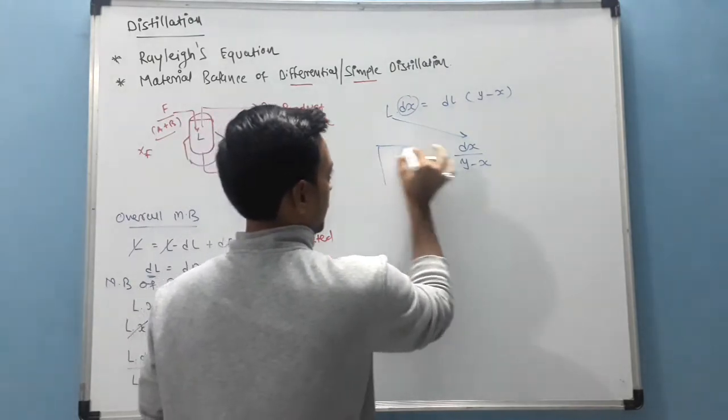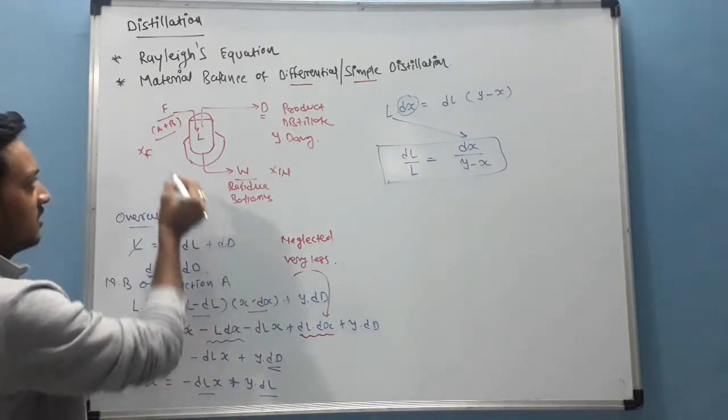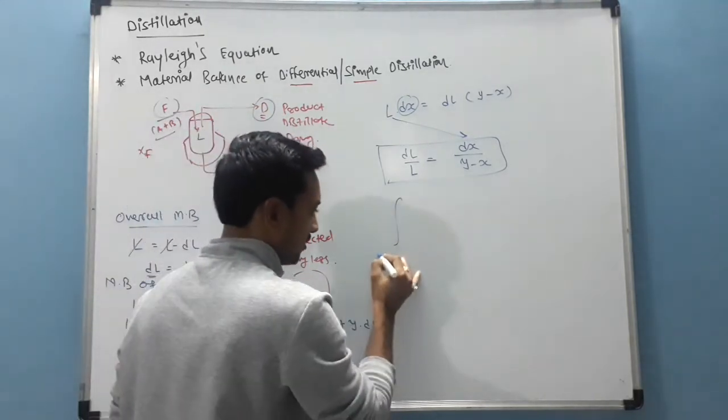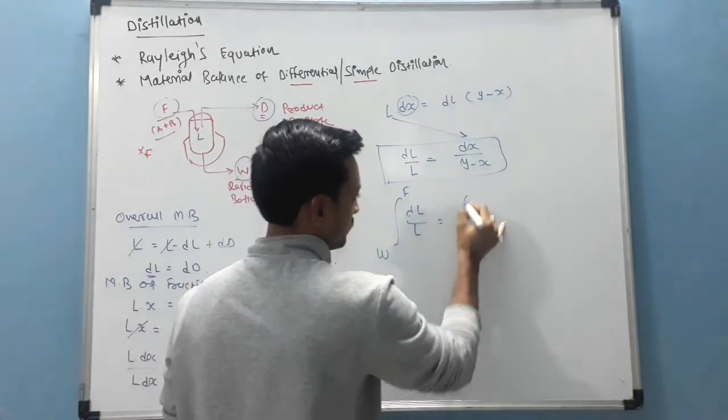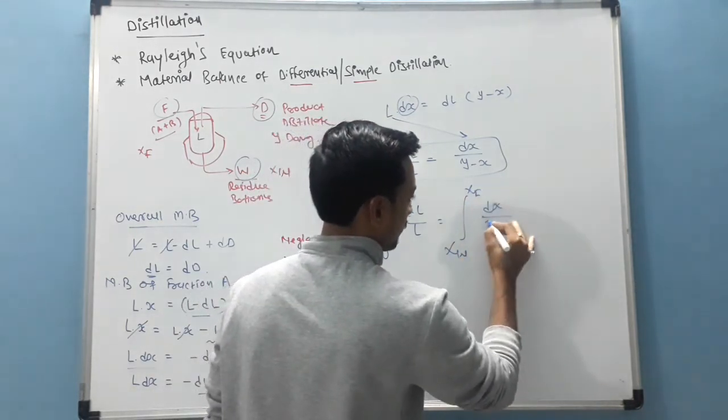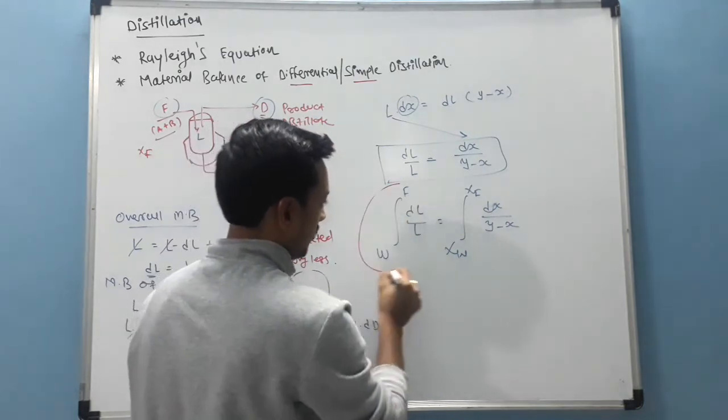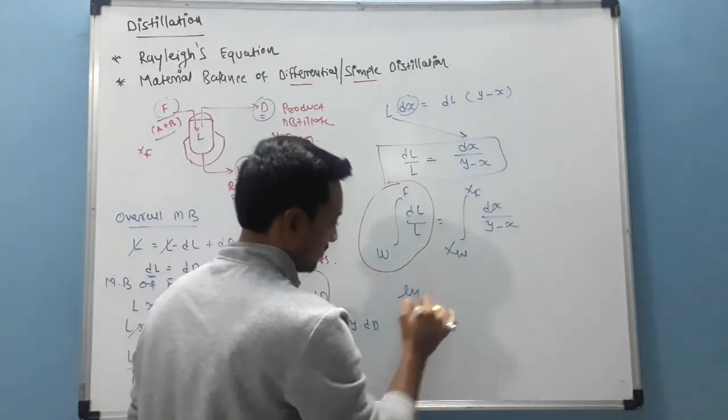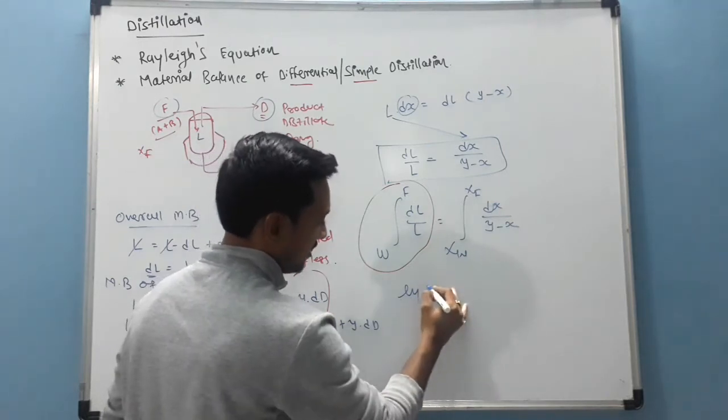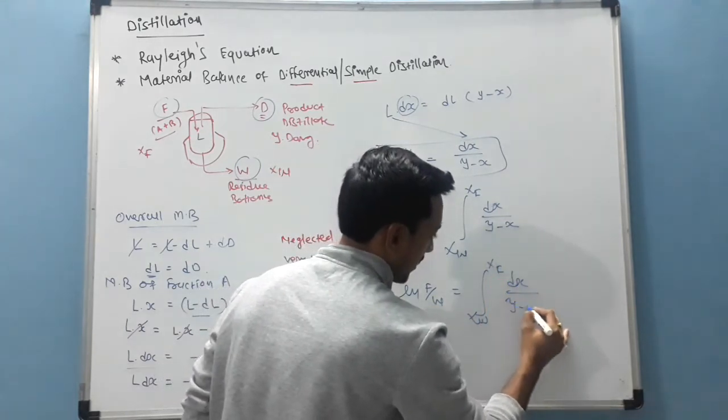So now integrate this equation with its extreme conditions. Which are extreme conditions? F, D and W. So by integrating W to F, DL by L, integration of XW to XF, DX upon Y minus X. The integration is LN upper limit minus lower limit. In short, I will write LN F by W is equal to XW to XF, DX upon Y minus X.